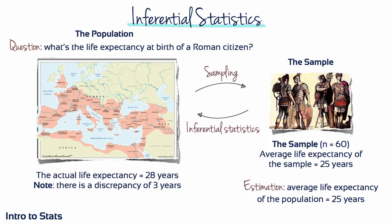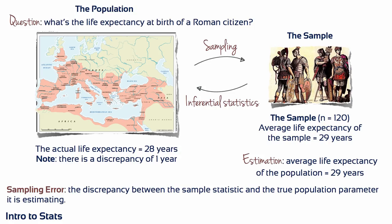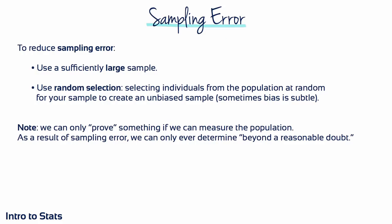We are inferring from our sample data that the life expectancy at birth of a Roman citizen is 25 years. However, if the actual life expectancy is 28 years, there would be a discrepancy of 3 years between the true population parameter and the sample statistic — we call this discrepancy sampling error. If we selected a larger sample of 120 individuals, we might get a sampling error of only 1 year. There will always be some margin of error when sample statistics represent population parameters, but sampling error is normal and can be minimised by using sufficiently large and randomly selected samples.